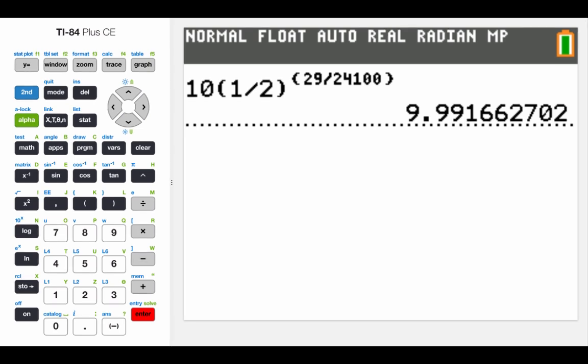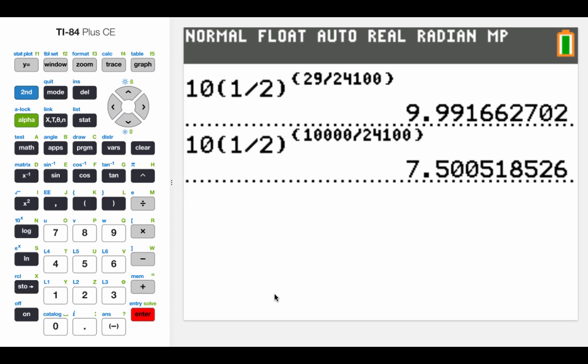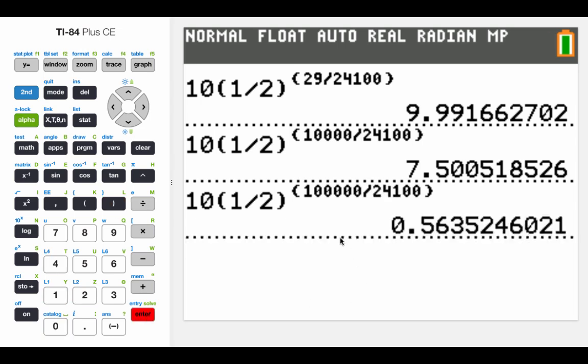For the next one, we're going to change that T value to 10,000. Hit enter, and there will still be 7 and a half pounds left over after 10,000 years have gone by. And for the last one, we're going to use a T value of 100,000. So after 100,000 years, there will still be just over half a pound of this plutonium left over.